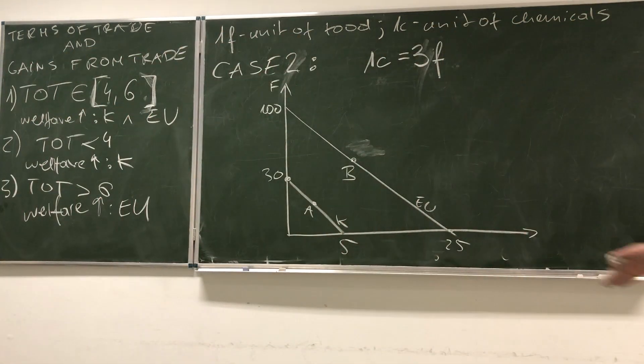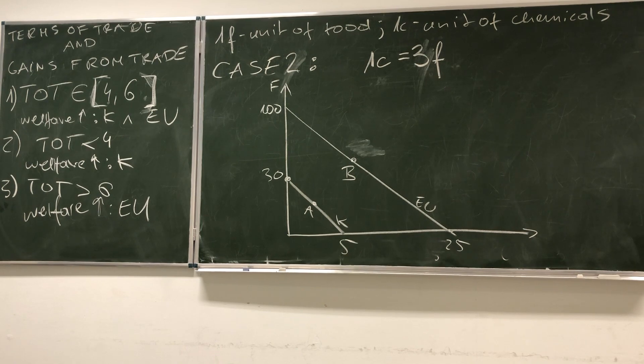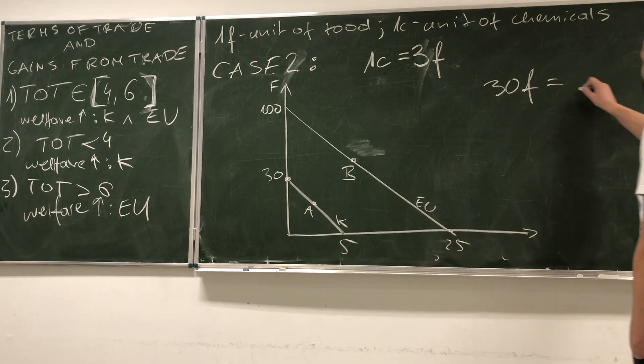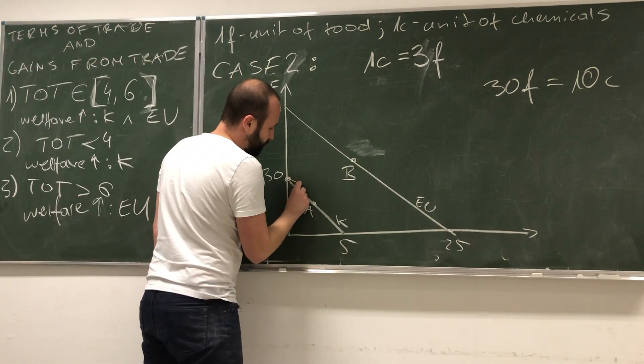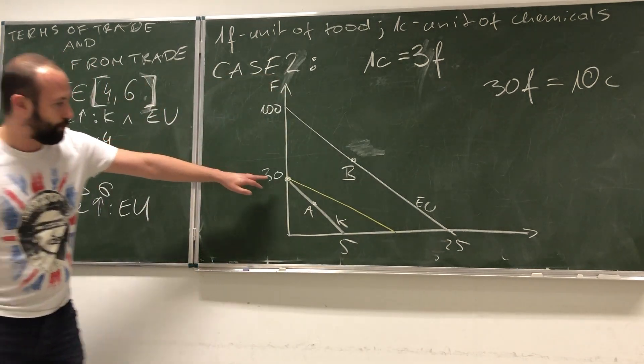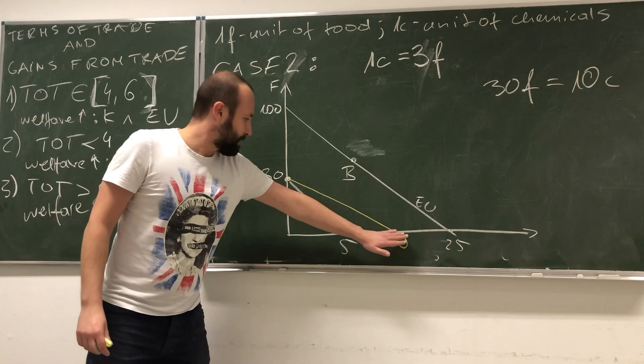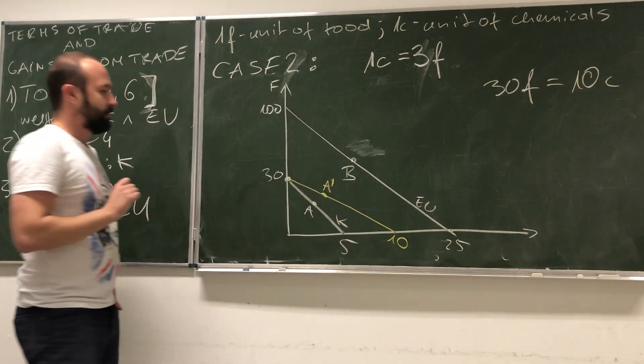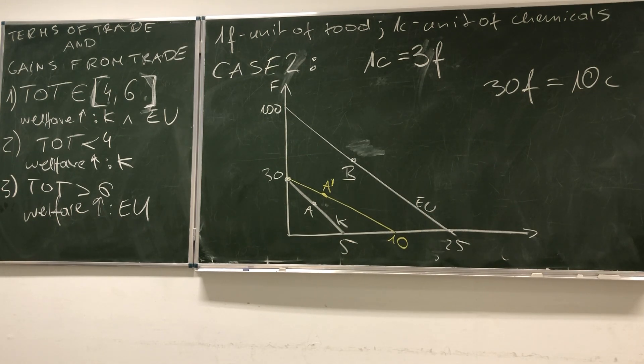In this case, let's start with Kenya. What Kenya can do? Kenya can specialize in the production of food and can produce 30 units of food. It can exchange it now for 10 units of chemicals. Kenya's opportunity line is pivoting around the point of interest here. And now, as you see, the gains from trade for Kenya are even bigger. The possibilities here are way better than the previous case.